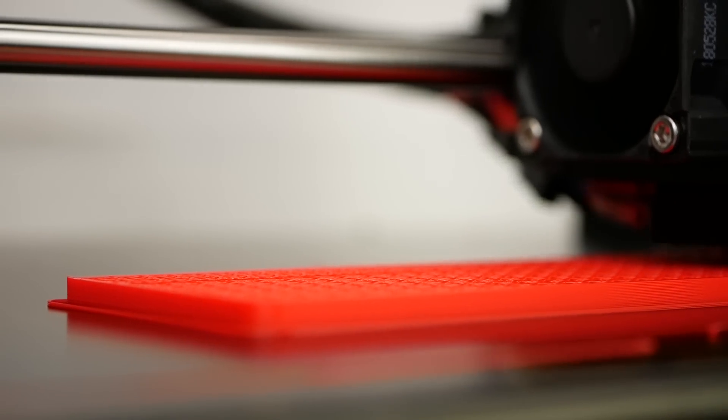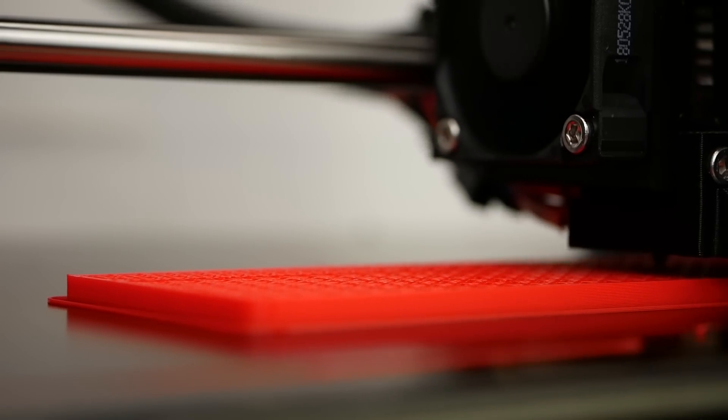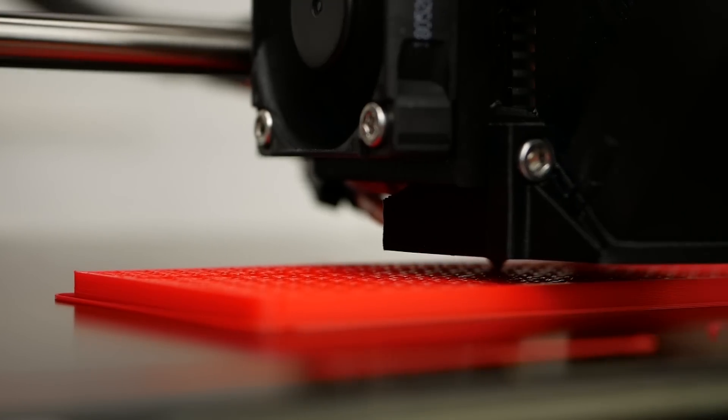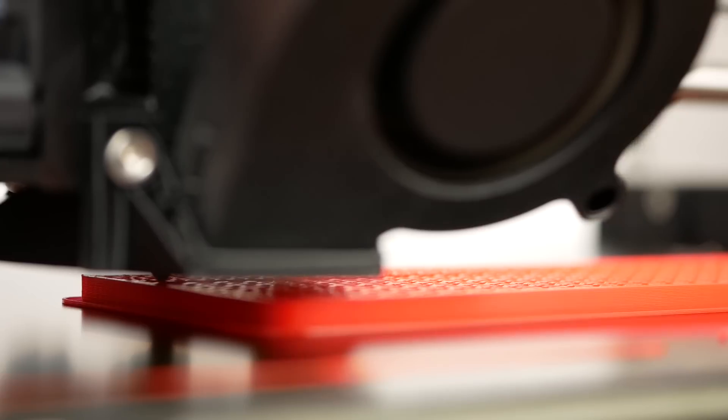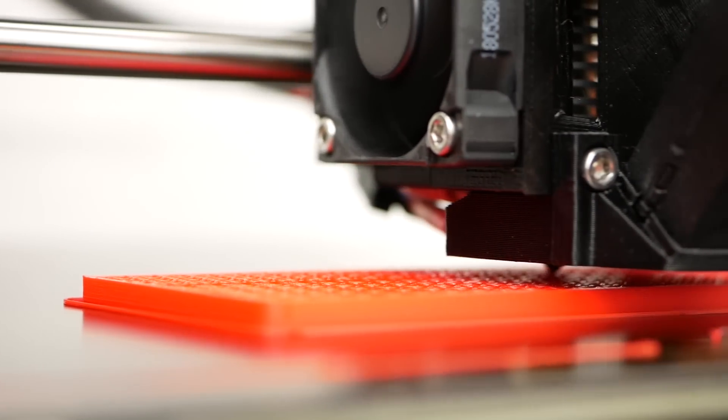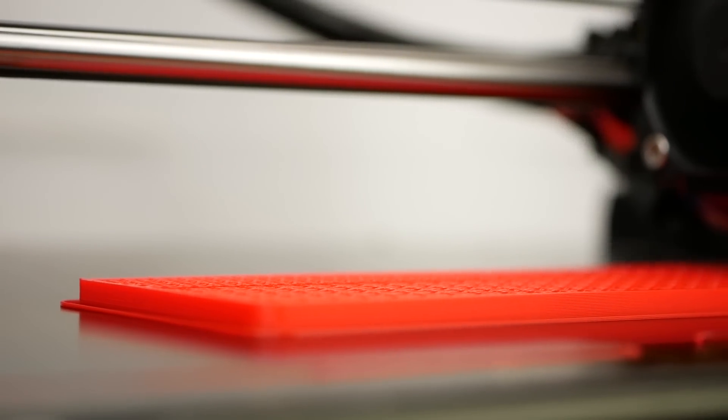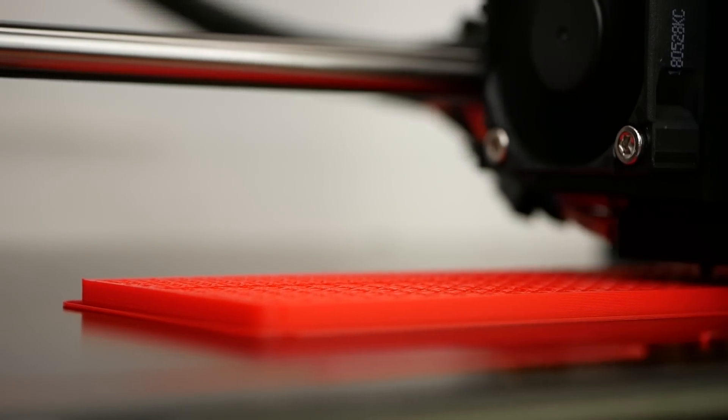For comparison, the usual moduli of plastics that we commonly print are between 1000 and 3000 MPa. Aluminum is already by an order of magnitude stiffer with around 70,000 MPa, Titanium is at 110,000 MPa, and steel has a Young's modulus of over 200,000 MPa.